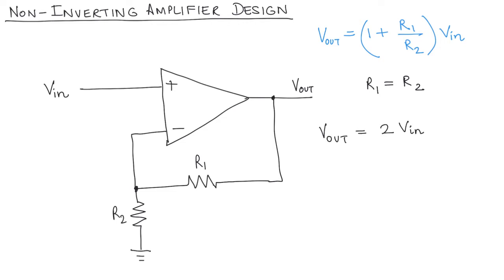Now the question I want to ask here is: how do you choose the values of R1 and R2? Can they be any values you want, or are there some restrictions? The answer, of course, is that there are some restrictions — you can't use just any values you want.